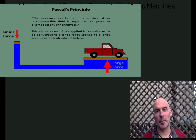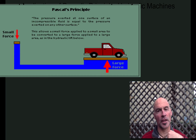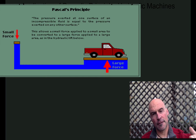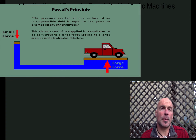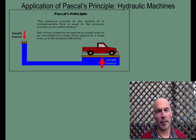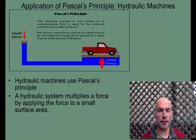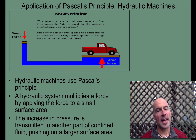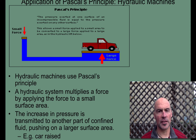Let's apply Pascal's principle using hydraulic machines. You can turn a small force into a large force because the force is distributed equally throughout the entire sealed fluid. You can exert a small force and, since it's acting on a larger surface area, it becomes a larger force. This allows a small force applied to a small area to be converted to a large force on a large area, such as a hydraulic lift. A hydraulic system multiplies force by applying it to a small surface area, and the increased pressure transmitted to a larger surface area raises a car with just a small amount of force.